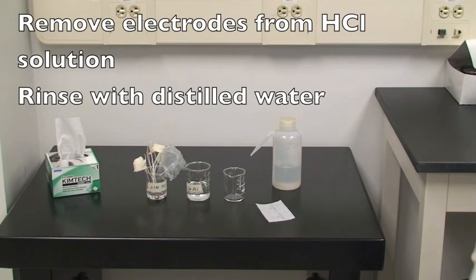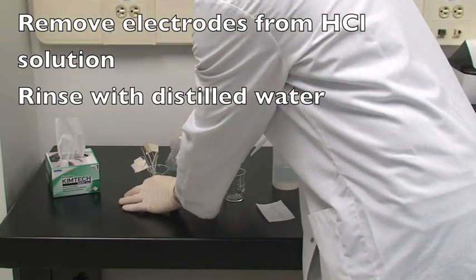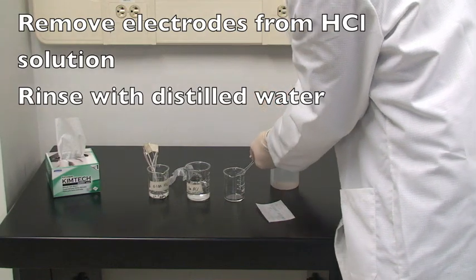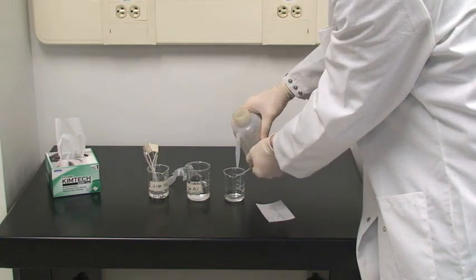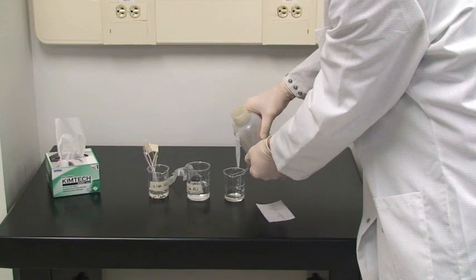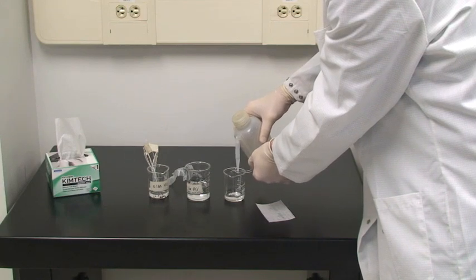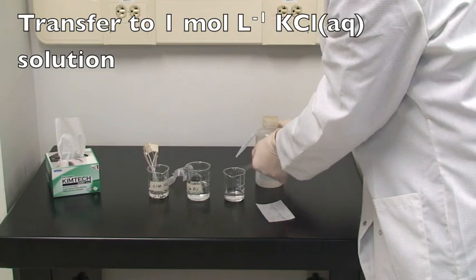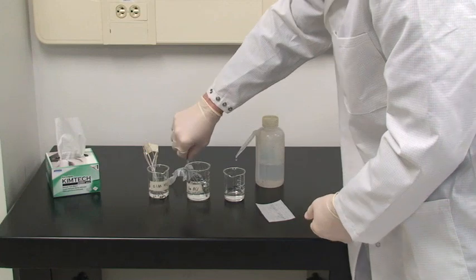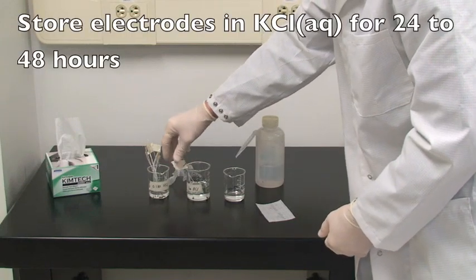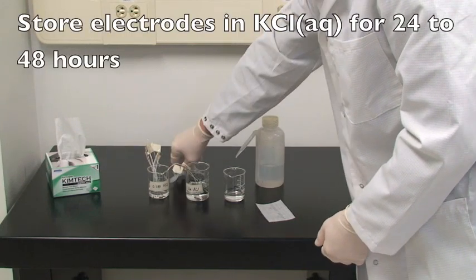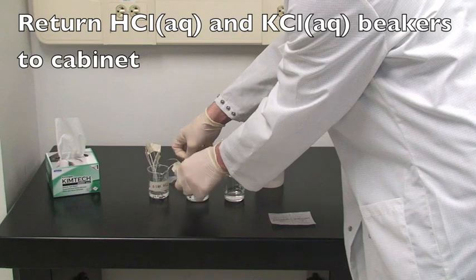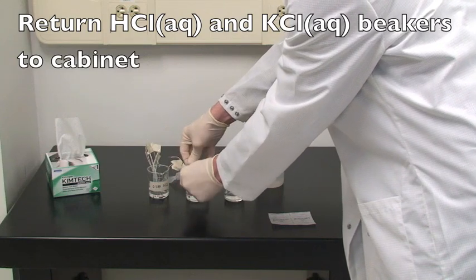After 48 hours we'll return and remove the electrodes from the hydrochloric acid solution and rinse them with distilled water. We'll then transfer both electrodes to one molar potassium chloride storage solution. We'll allow the electrodes to sit in the potassium chloride solution for 24 to 48 hours. Return both beakers, the hydrochloric acid and the potassium chloride, to the cabinet underneath the counter.